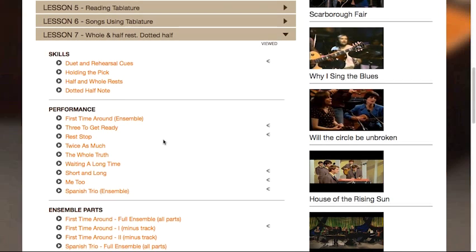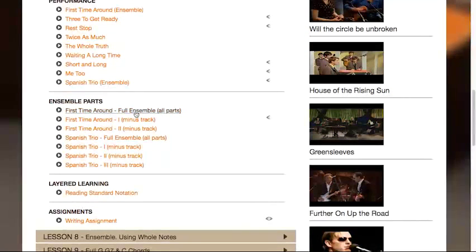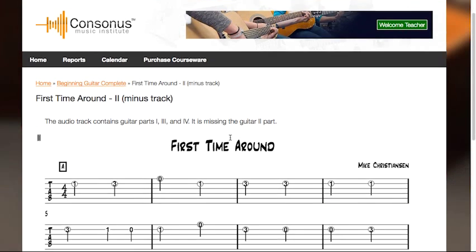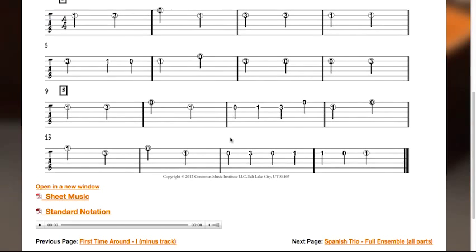The ensemble section contains the score and play-along tracks for the entire ensemble or for each part separately. For the individual parts, the play-along track eliminates that part so that the student can practice along at home or in the classroom. The rhythm section accompaniment tracks are ideal for use in guitar ensemble performances.